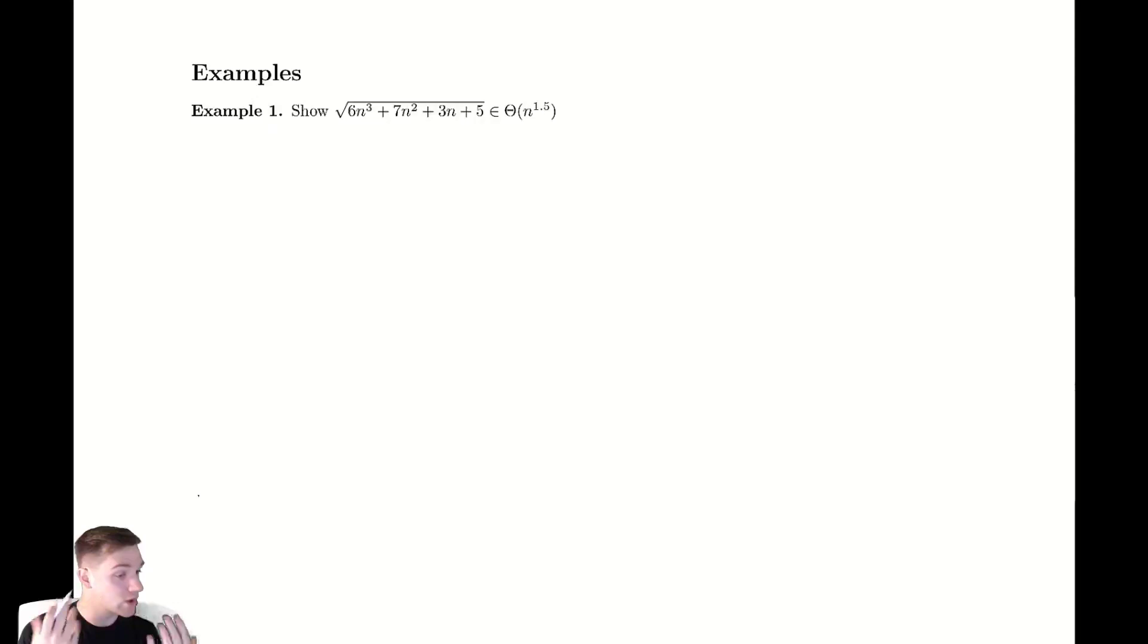The one that's going to dominate the growth rate the most, that'll be the thing that grows the quickest. And in this case we might go, ah, I see a 6n³ there and it's inside of a square root. The square root of 6n³ is something like the square root of 6 times n to the 1.5.